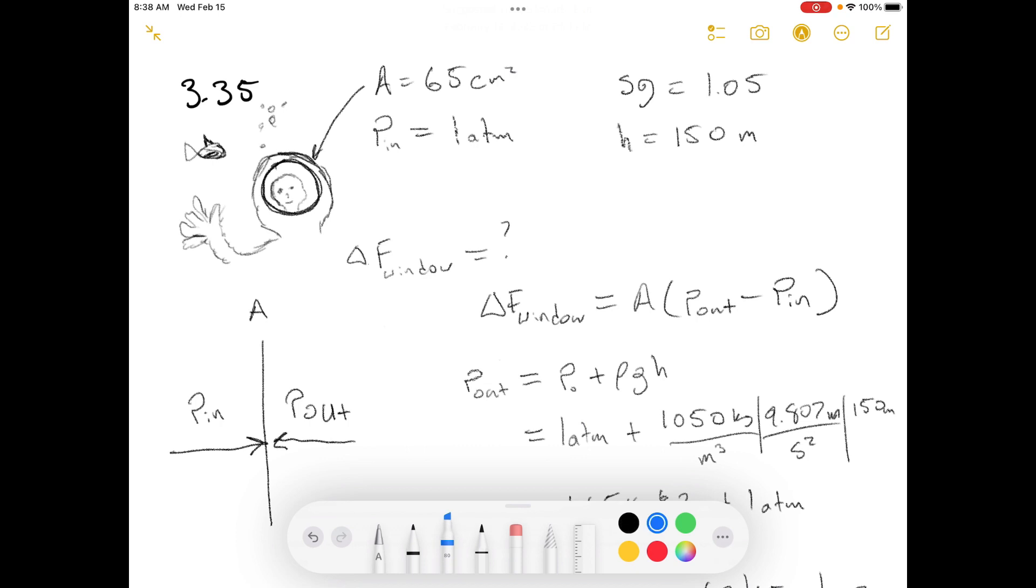The viewing window in a diving suit has an area of roughly 65 centimeters squared. If an attempt were made to maintain the pressure on the inside of the suit at one atmosphere, what force would the window have to withstand if the diver descended to a depth of 150 meters? Take the specific gravity of the water to be 1.05.